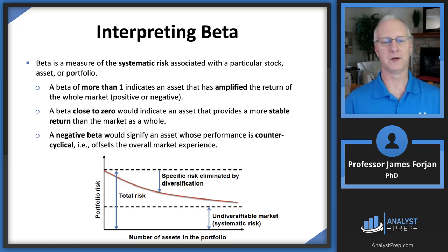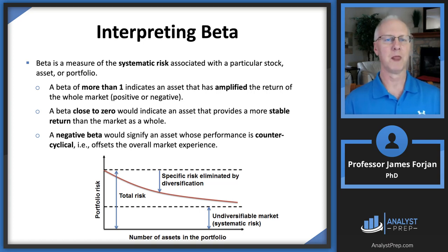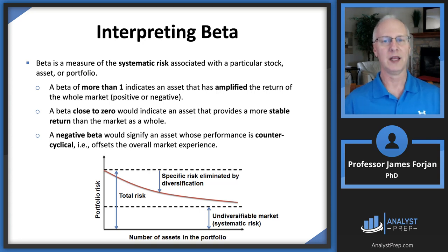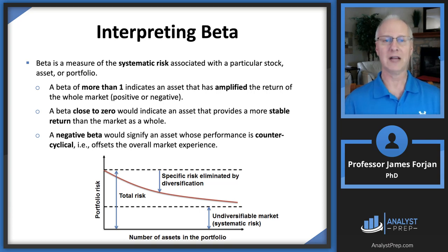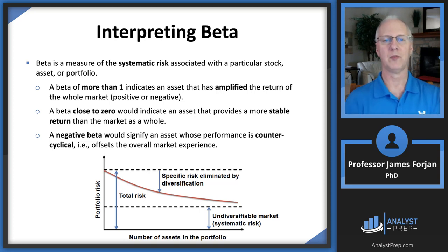Let's interpret beta. On the graph, the horizontal axis shows the number of assets in a portfolio, and the vertical axis shows portfolio risk — think of that as standard deviation, which is a measure of total variability in stock returns. Standard deviation is used as a risk measure across many fields like engineering, science, and medicine — financial risk managers don't have a monopoly on it. The average standard deviation of investing in just one stock is about 50%, meaning on average you're going to be 50% wrong.